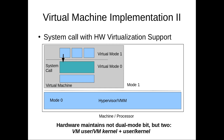This is effectively where QEMU comes in. We're using QEMU to run xv6, and QEMU is the thing that handles all of those exceptions from the virtual machines.